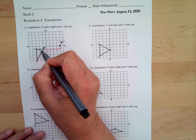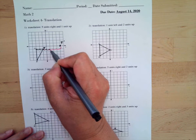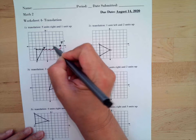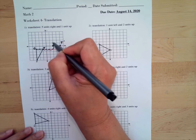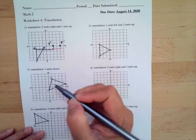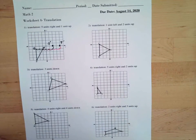...units to the right, so one, two, three, four, five, and one unit up. So this is our new letter G. Then for letter B.